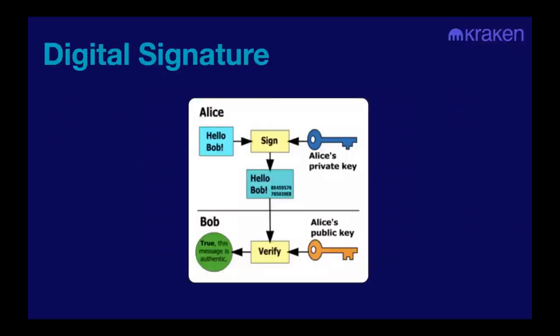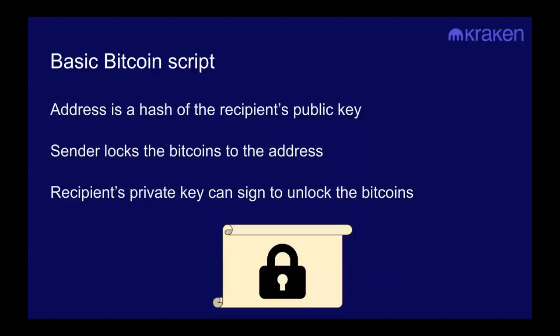How do we use this address? We use it with digital signatures. Digital signatures are for verifying the authenticity and integrity of digital messages. In this example, Bob wants to make sure that the message he received — 'Hello, Bob' — really is from Alice, so he uses Alice's public key to verify the message. In Bitcoin, the system acts as Bob, verifying that the sender, Alice, actually has the private key needed to unlock the Bitcoin.